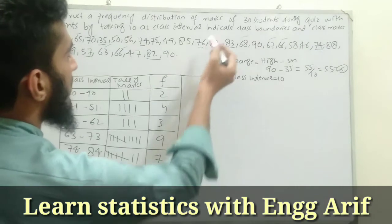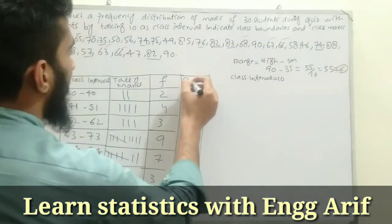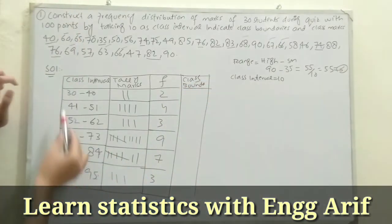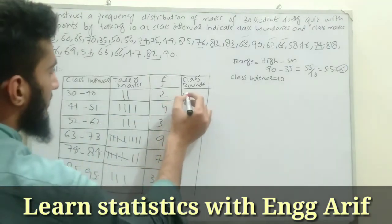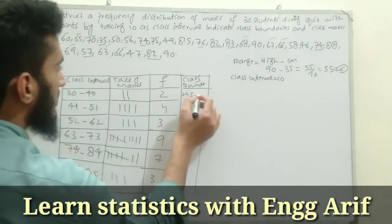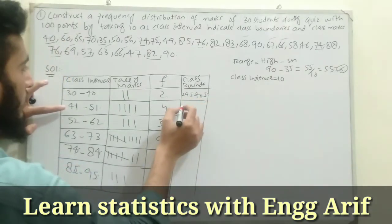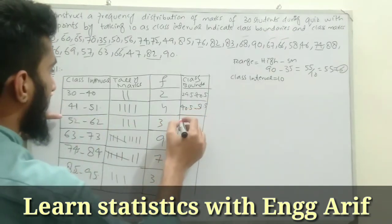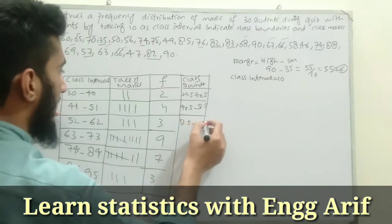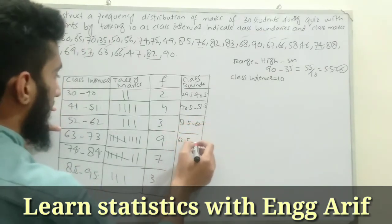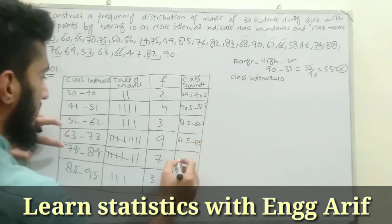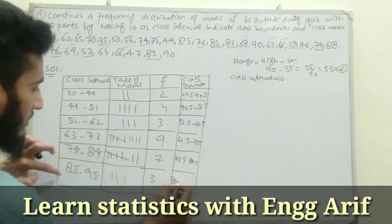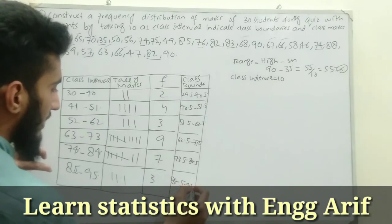The class boundaries are found by subtracting 0.5 from the lower limit and adding 0.5 to the upper limit of each interval. So the boundaries are: 29.5–40.5, 40.5–51.5, 51.5–62.5, 62.5–73.5, 73.5–84.5, and 84.5–95.5.